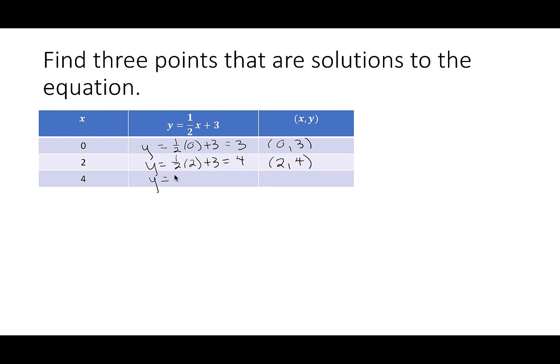Then our last one, we have y is one-half of 4 plus 3. This time, a half of 4 is 2. 2 plus 3 is 5, so our last point will be (4, 5).